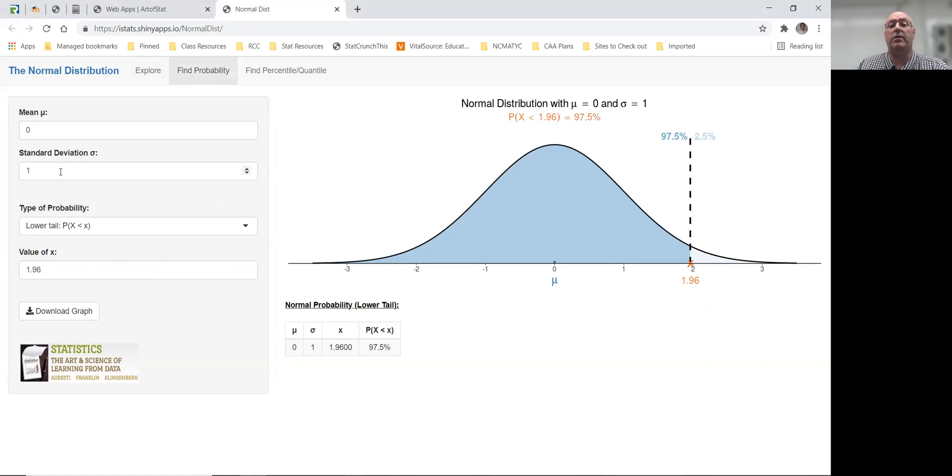The nice thing about using the probability calculator is you don't need to pre-calculate the z-score. You can simply enter the mean and standard deviation of your value, and it will calculate the probability for you.